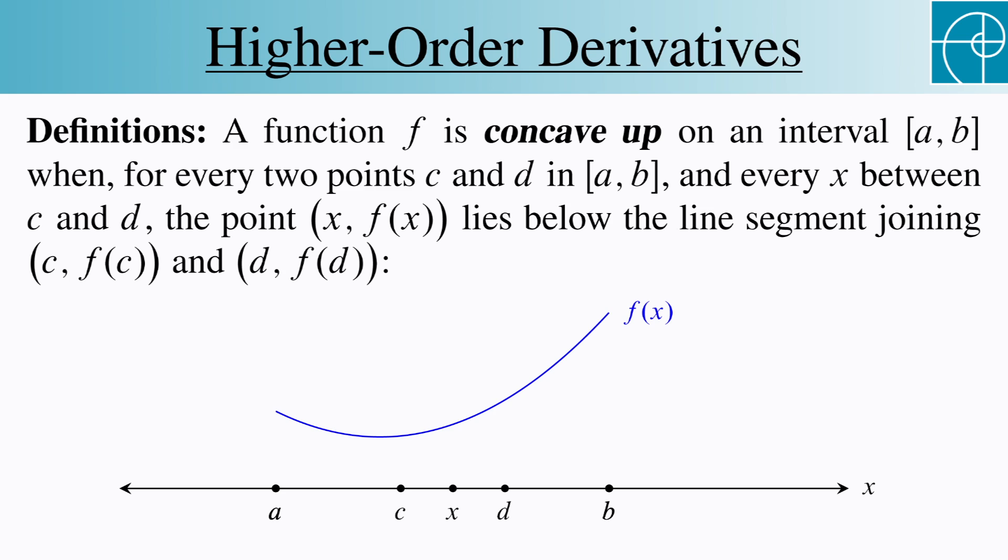A function is concave up on an interval [a,b] when, for every two points c and d in the interval, and every x between c and d, the point (x, f(x)) lies below the line segment joining (c, f(c)) and (d, f(d)).